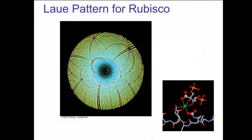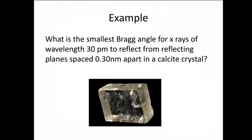This is the Laue pattern for rubisco, also known as ribulose-biphosphate-carboxylase-oxygenase, which is an enzyme that is present in plants that takes part in the process of photosynthesis. The image on the right shows part of the structure of rubisco.